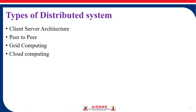The first type is client-server. There is a client who requests a service or a resource from the server. The server responds to those requests received from the client, and this communication occurs between the client and server.